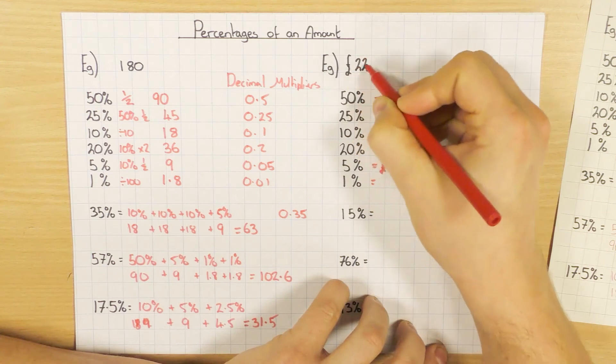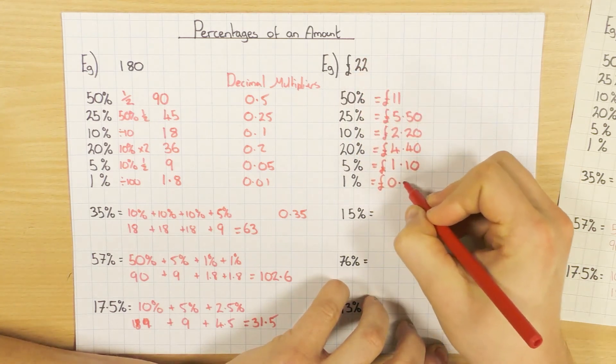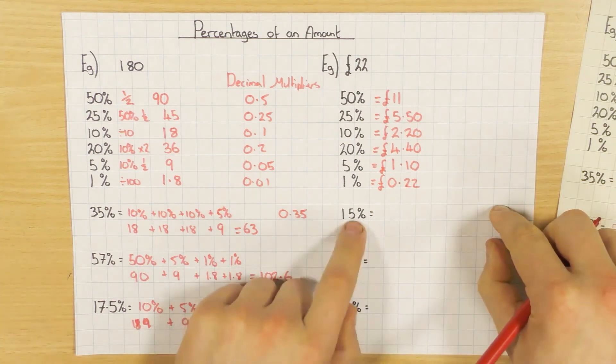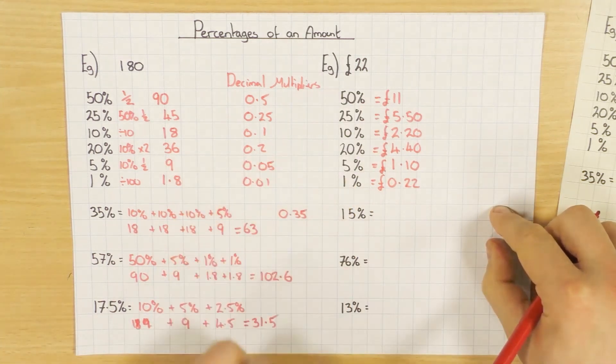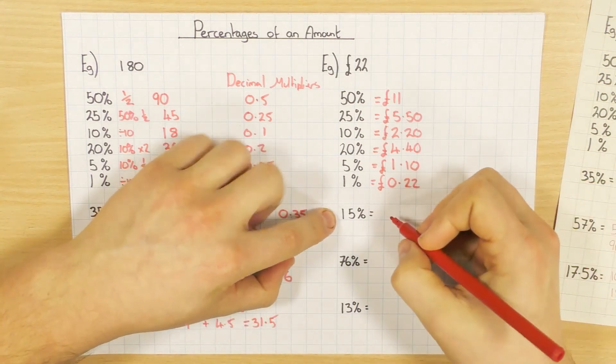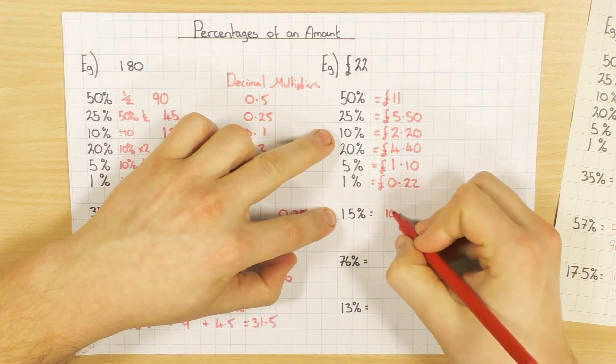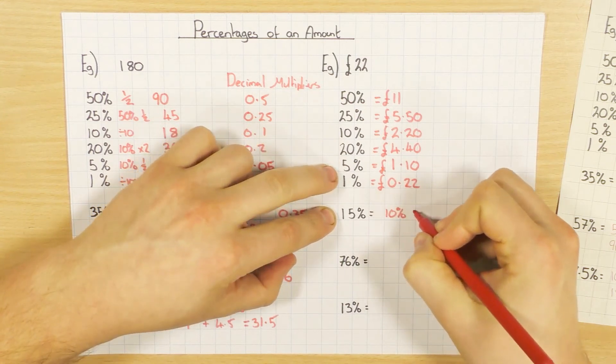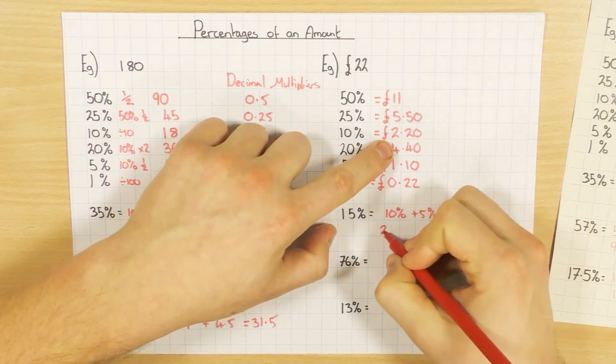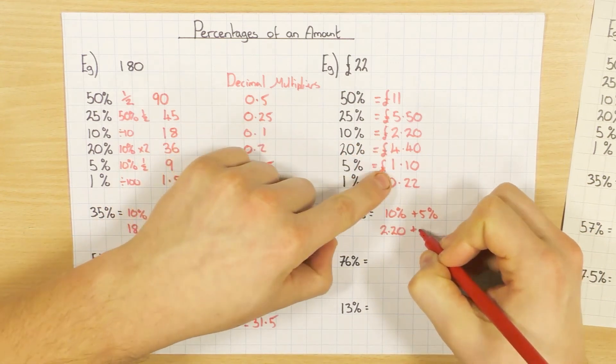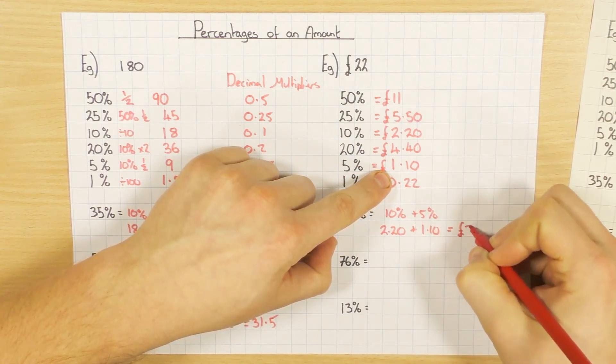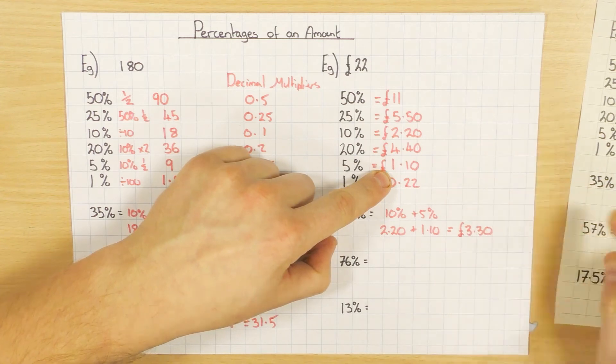5%, well, I've got 10% is £2.20, so I'm going to half it to get £1.10. And finally, 1%, divide that by 100. So I'll have 0.22, or 22p. So they're my main ones, and I'm going to use these to help me find 15%, 76%, and 13%. So let's have a go with 15%, nice and easy. Let's use a 10% and a 5%. So 10% we worked out was £2.20, and add the £1.10, which will give you £3.30.